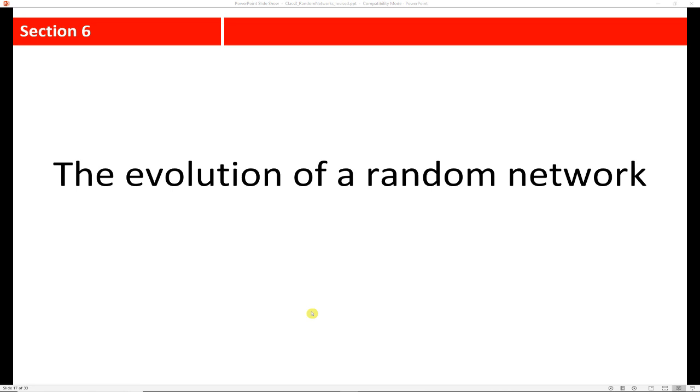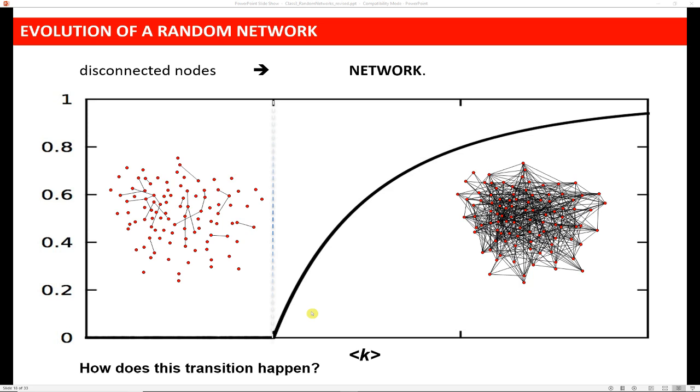So how do random networks behave as they gain links? What's the evolution of a random network? Well, the way it happens is, and this is what I want you to see when you're playing around with Python, is that as you increase p, what you'll find is that you'll start out with a bunch of nodes that are disconnected and you'll start to gather edges a little bit at a time. And then sort of out of nowhere, you'll have this critical point that's reached when all of a sudden you have a giant component.